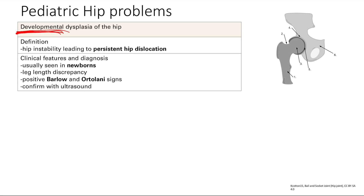You confirm this with ultrasound. You might think MSK — give an x-ray. But remember how bones are formed? This is an endochondral ossification, and that takes time. The cartilage isn't ossified until around four months, so you're going to use ultrasound to confirm this.